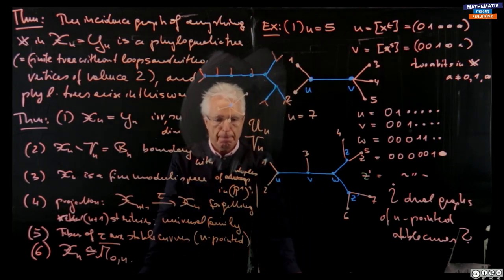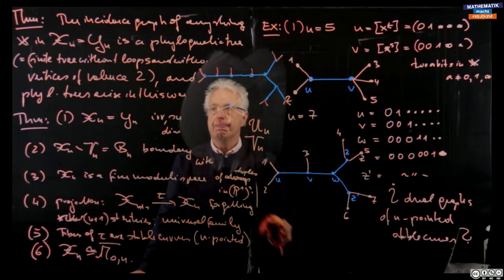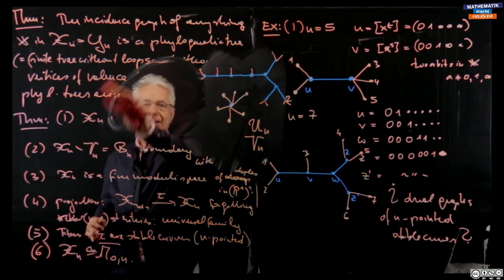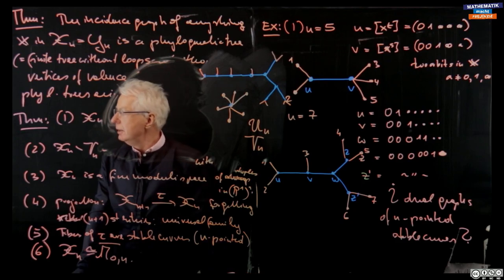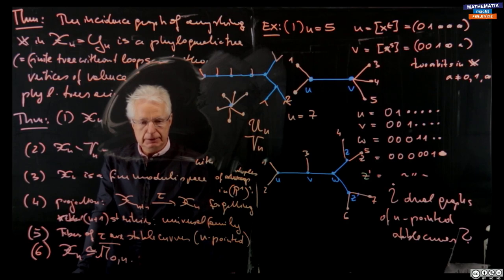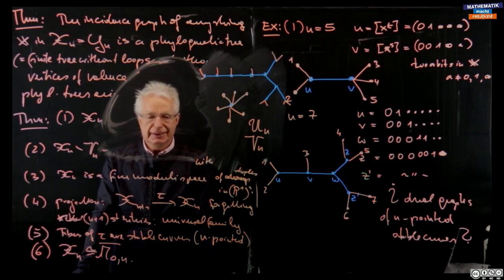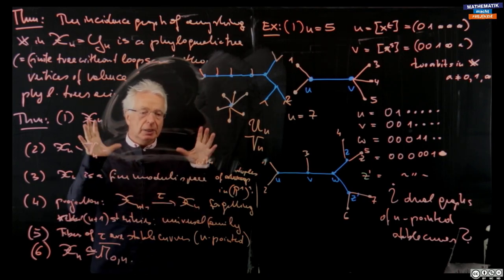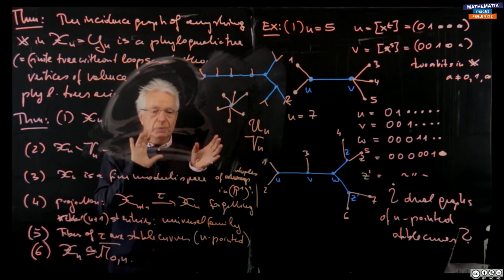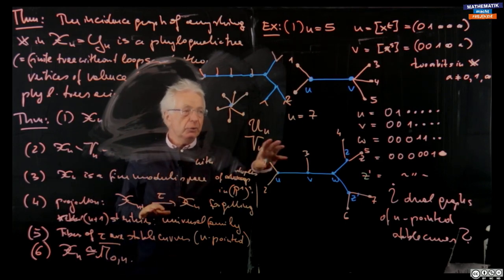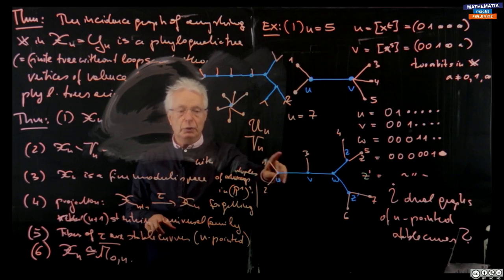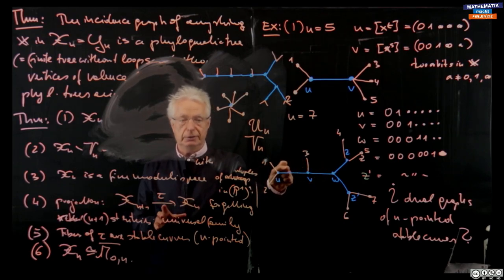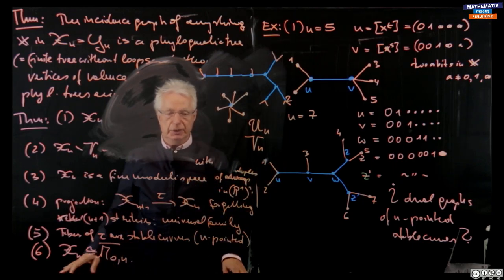Second question: the projection goes from X_{n+1} to X_n. In terms of stable curves, if I forget a marking, it could happen that I don't satisfy the stability condition anymore, so somehow things collapse. You have to contract in a minimal way so that you still get a stable (n minus 1)-pointed stable curve. In this projection map, whenever you delete a leaf which destroys the property of being a phylogenetic tree, you have to contract.